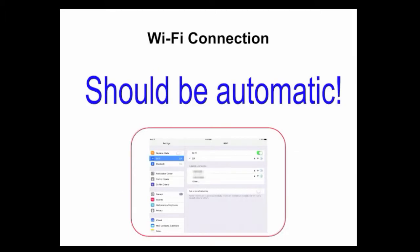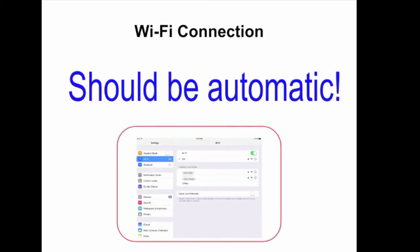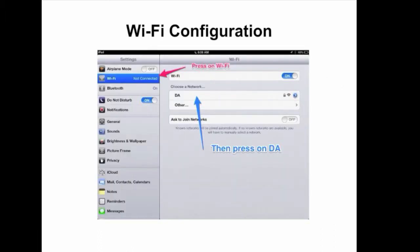Wi-Fi Connection: Once you come on campus, you should automatically be connected to DA. Go into Settings, press on Wi-Fi, and look for a checkmark next to DA. If you do not have one, use the following slides to troubleshoot your Wi-Fi connection. Once you have pressed on the Settings gear, press on Wi-Fi — you may or may not be connected, and you will want to choose the DA network.